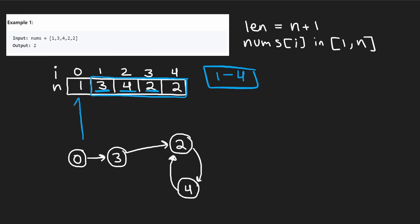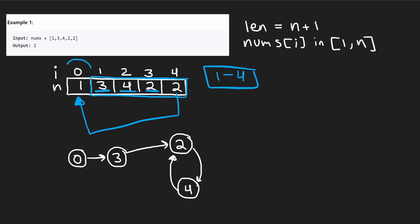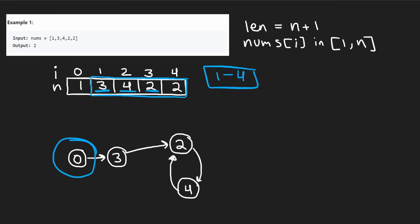What about index zero — is it going to be part of the cycle? Notice how nothing is ever going to point at index zero, because our range is between one through four, none of them is going to be zero. So we can guarantee that index zero is not going to be part of the cycle. When I drew this array as a linked list, index zero is not included in the cycle — and that's very important because when we start traversing this linked list we're always going to start at index zero, since we know it's not part of the cycle.